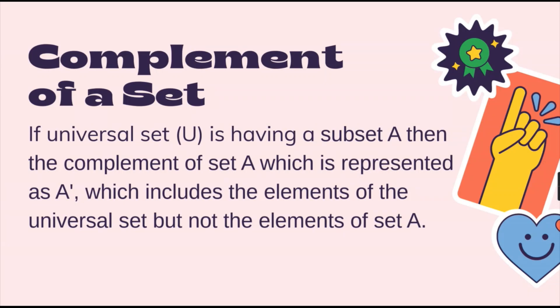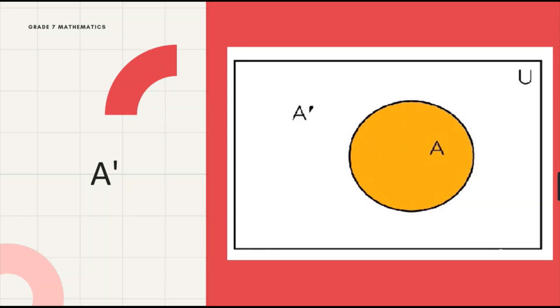So this is what we mean by the A complement, represented by this diagram right here. If we have the universal set U here in this square and we have set A right here in this yellow part, all the other elements outside of set A but still under set U is what we call the A complement.